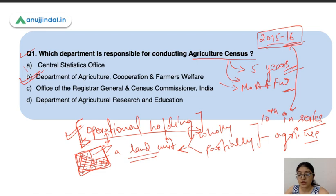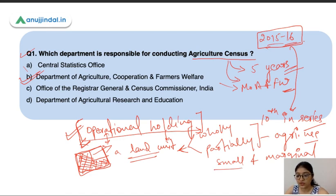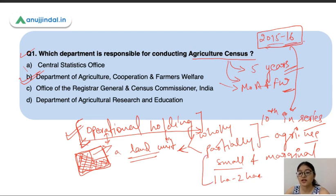You will hear a lot about small and marginal Operational Holdings. This refers to the size of an Operational Holding. A small holding is 1 to 2 hectares, and a marginal holding is less than 1 hectare. Then there are other categories: semi-medium, medium, and large Operational Holdings. This concept should be very clear.